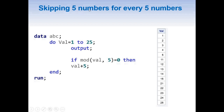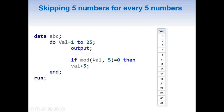Let us see how this whole thing works to skip 5 numbers for every 5 numbers. When val equals 1, it outputs, then checks the IF statement — since 1 is not exactly divisible by 5 to give a remainder of 0, it goes back into the loop. It increments and outputs 2, then 3, then 4. When it comes to 5, it outputs and hits the IF condition — 5 is exactly divisible by 5, so it adds 5 to val, making val equal to 10.